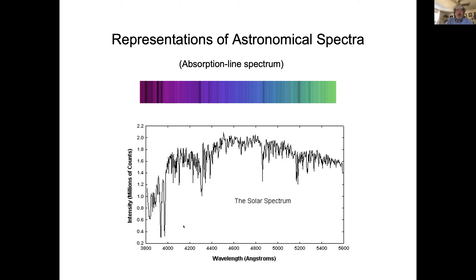There's a hydrogen line at 4102 angstroms. On the bottom here is a plot of wavelength in angstroms versus intensity — how much light we're getting at different wavelengths. When doing spectroscopy, we almost always use a plot like this rather than just a visual rainbow, because it's much easier to compare the actual values — how much absorption you're getting here versus there. With a graph you get actual numbers and actual data.